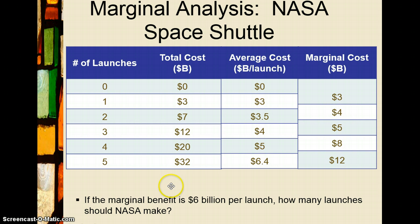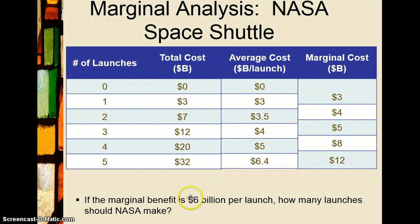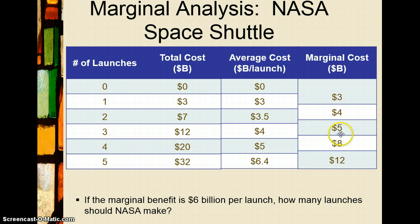That fifth launch, which Professor Bannafoot testified we should definitely take, is going to cost an extra twelve billion dollars but only give us a benefit of six billion. Since we only take an activity if marginal benefit is at least as great as marginal cost, we should clearly not take this fifth launch. In fact, we should never have taken the fourth launch either — the appropriate number of launches is three.